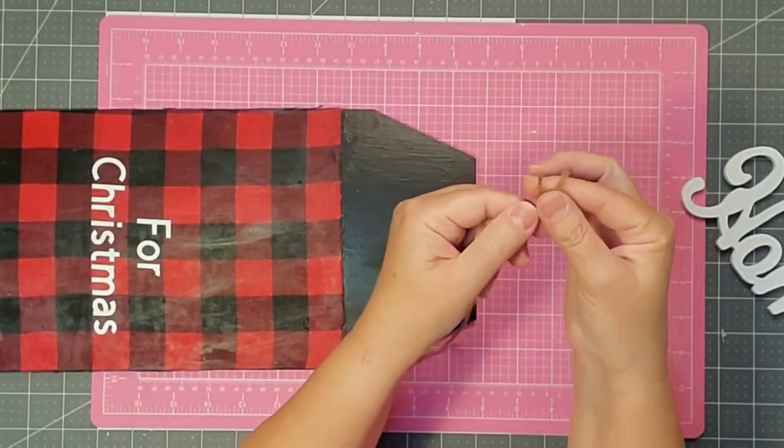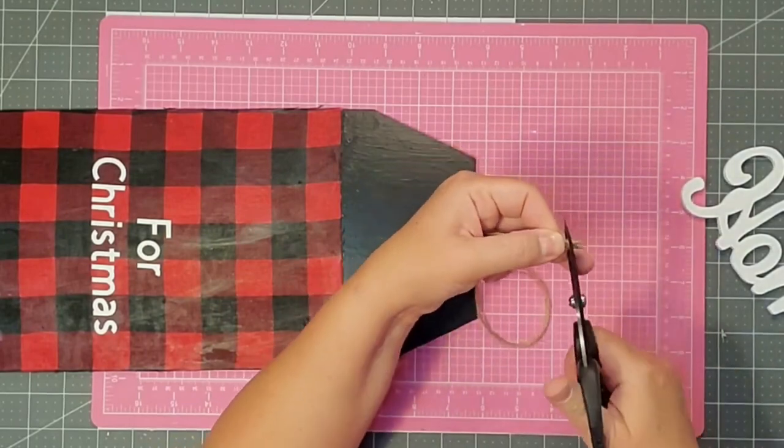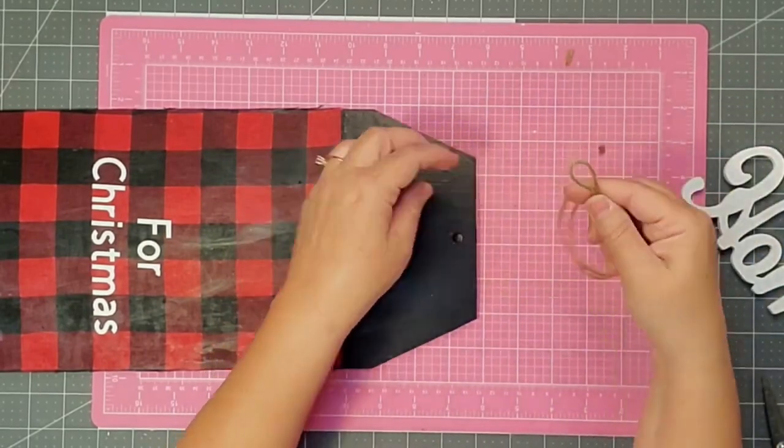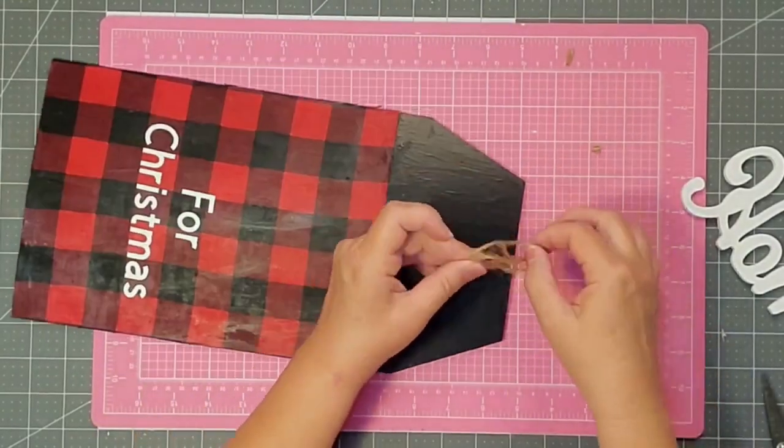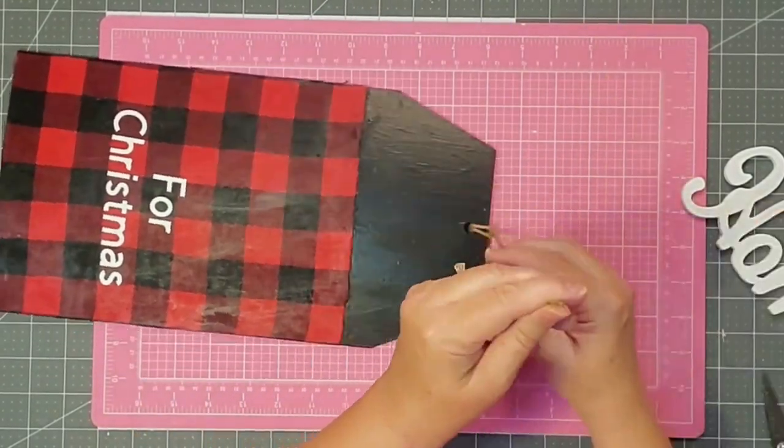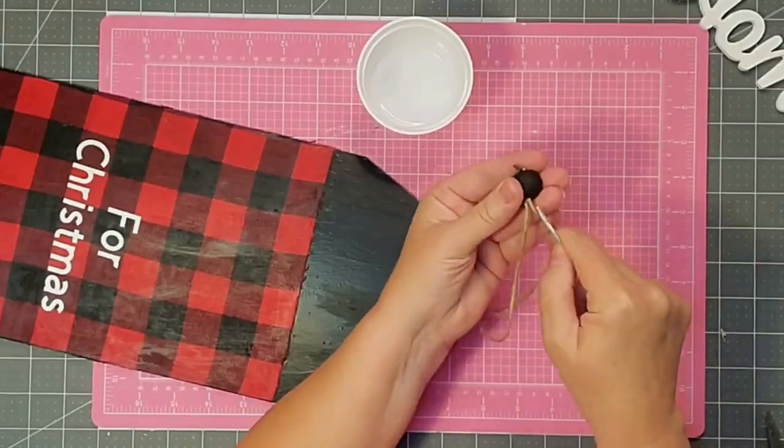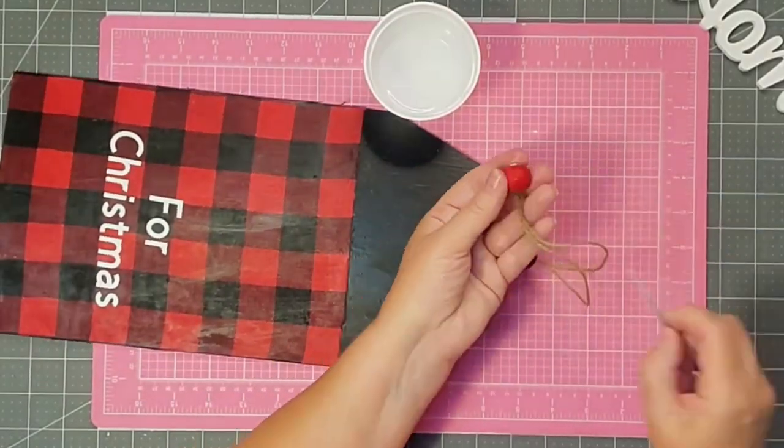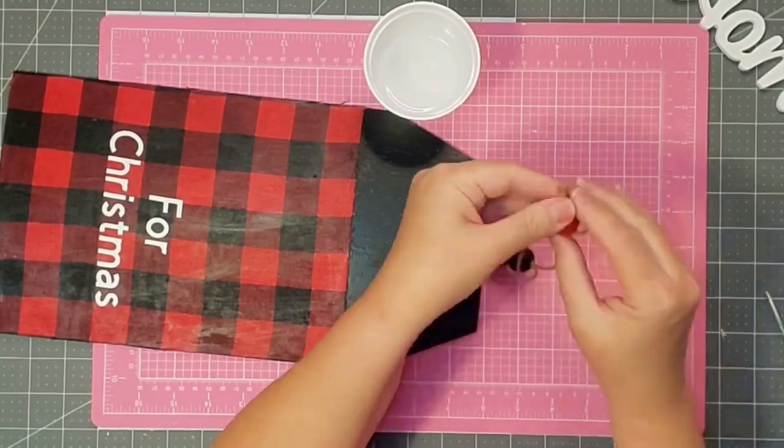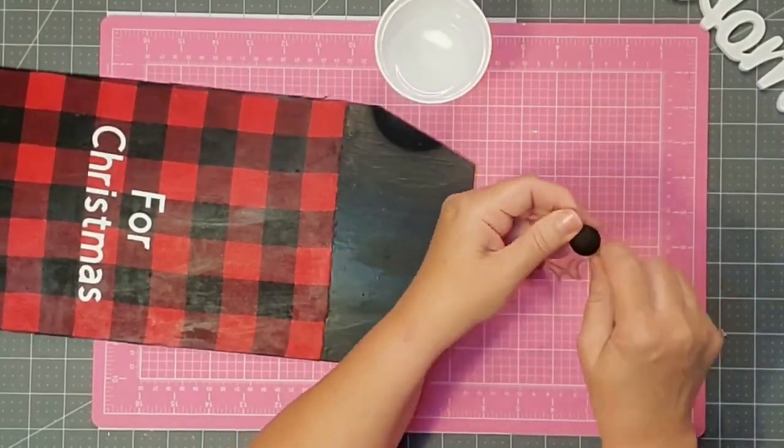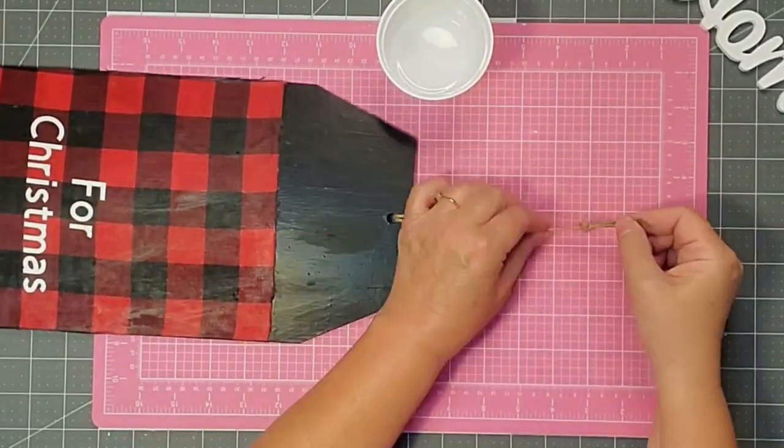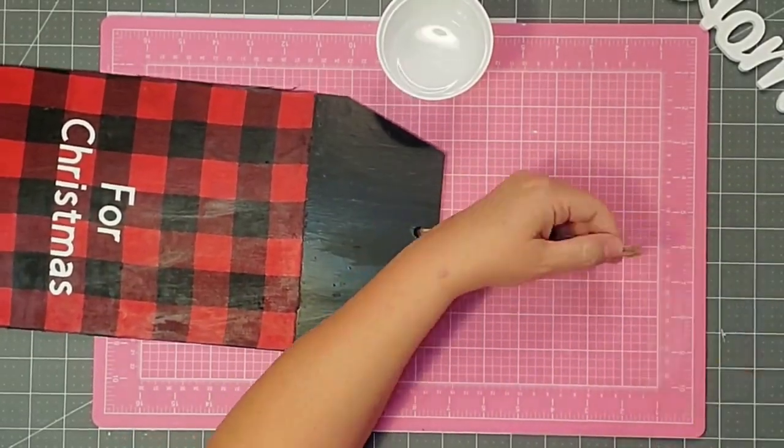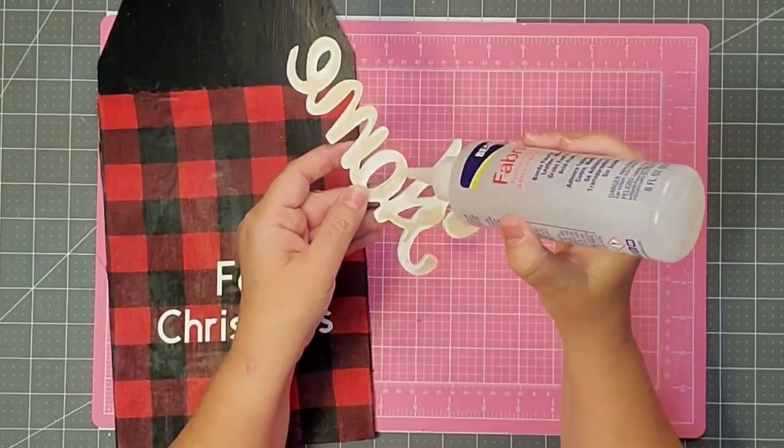I cut a piece of twine about 22 inches long, and then I'm just going to fold it in half. I'm going to take the loop edge and pull it through the hole on my sign, and then pull my twine back through it. And then I'm just going to string on my beads on that double twine, red, then black, then red, then black. And once I get that done, I'm going to tie a tight knot so that they don't slide. And then I'll tie another knot closer to the top.